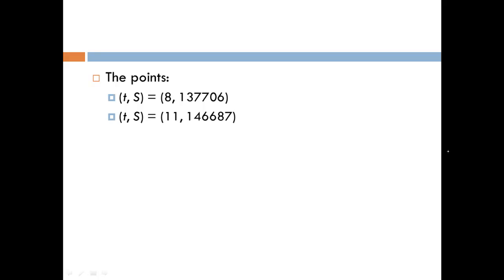We have two points, where the x value, or the T value, is the year since 2000. So we have T equals 8 and T equals 11 for 2008 and 2011. The y value for each point is the number of students enrolled in the Wake County Public School System.